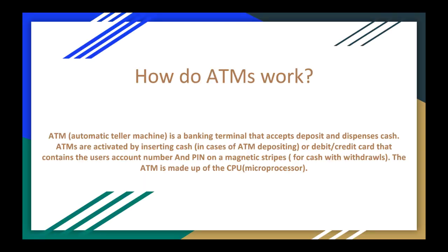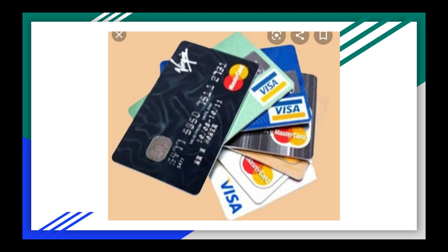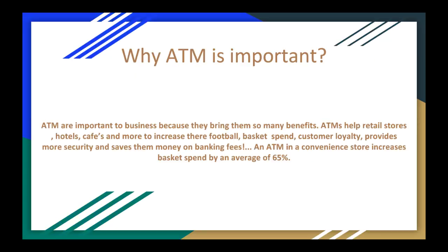How do ATMs work? An ATM is a banking terminal that accepts deposits and dispenses cash. ATMs are activated by inserting a cash, debit, or credit card that contains the user's account number and PIN on a magnetic stripe. The ATM is made up of a CPU.